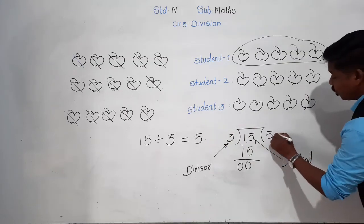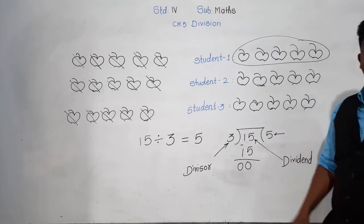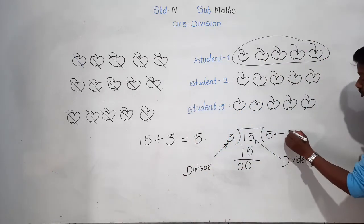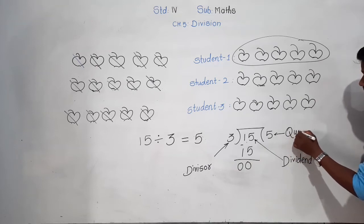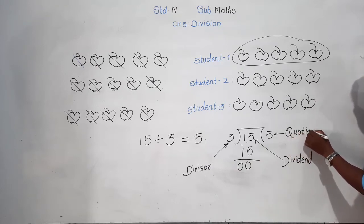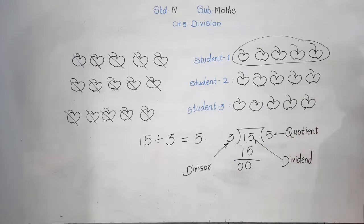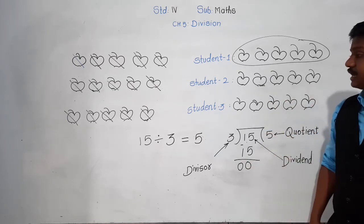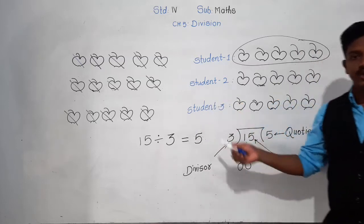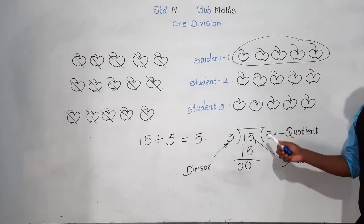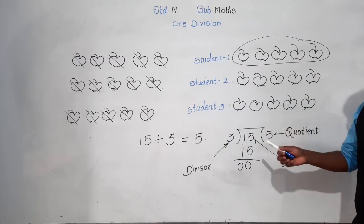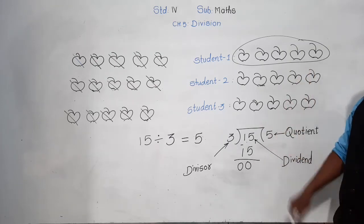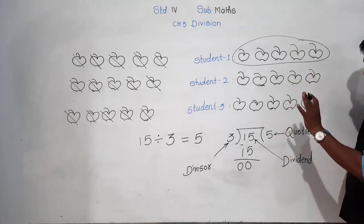The answer which is obtained in the process of division is called the quotient — Q-U-O-T-I-E-N-T, quotient. So when you solve examples afterwards, you will not just say 'find the answer' — you will say 'find the quotient and the remainder' in the process of division.